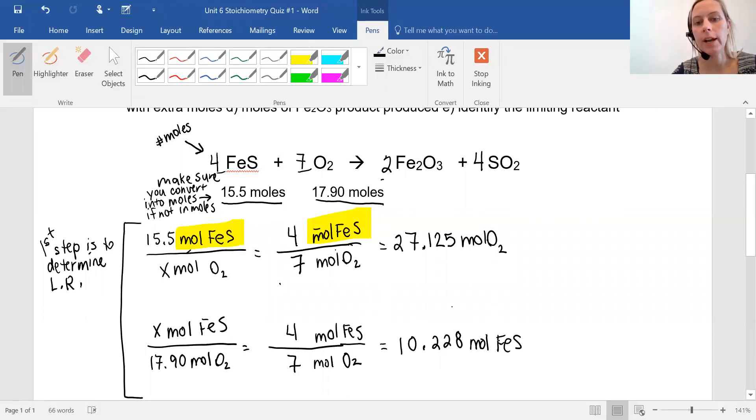Okay, so I have my two values. Now I need to know how to determine your limiting reactant. Notice that Mrs. Silkson gave you 15.5 moles of iron sulfide and 17.9 moles of oxygen. The amount that I could produce from this equation is 27. So I have the amount available to be produced. I'm only using 17.9 because that's what I've given you. However, if you look at the number of your iron sulfide, your iron sulfide can only produce 10.228. But this is how much I provided. So there's going to be an excess amount there because it's not enough.